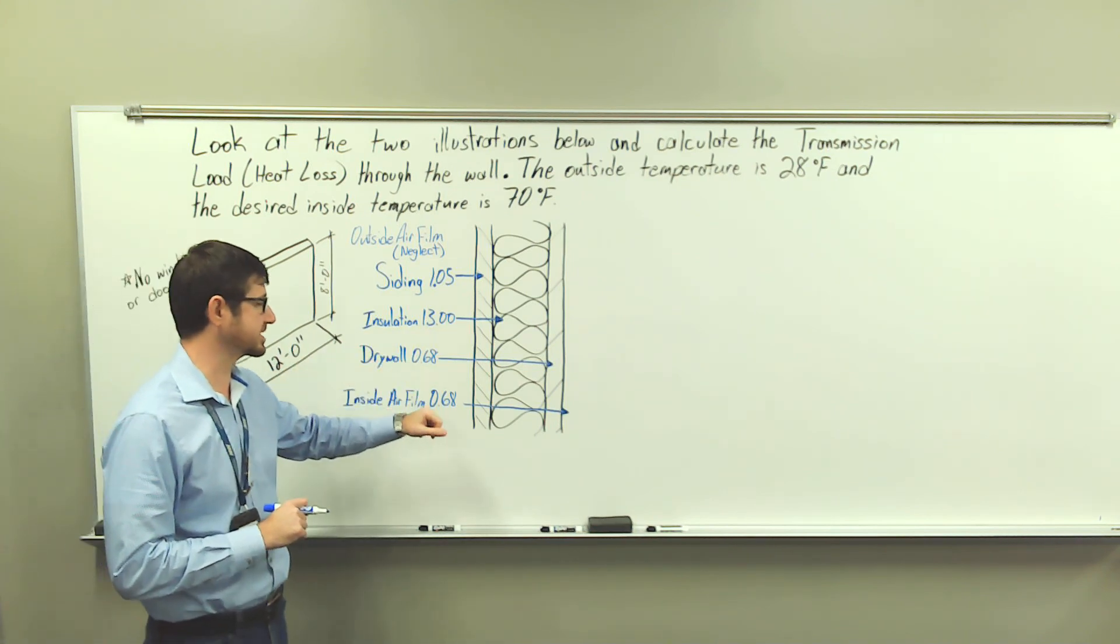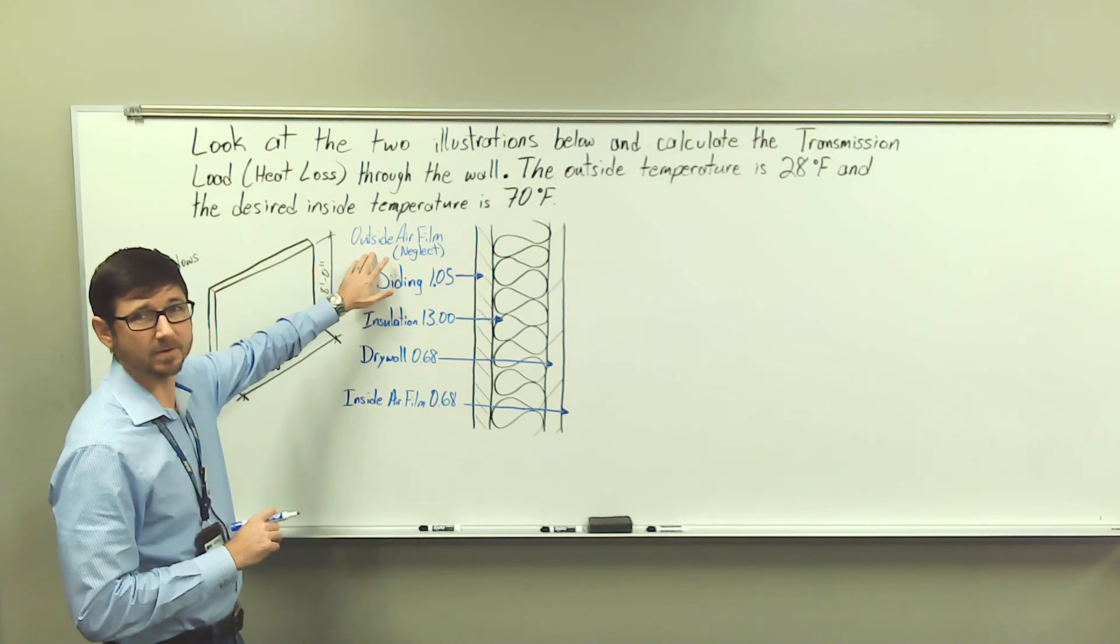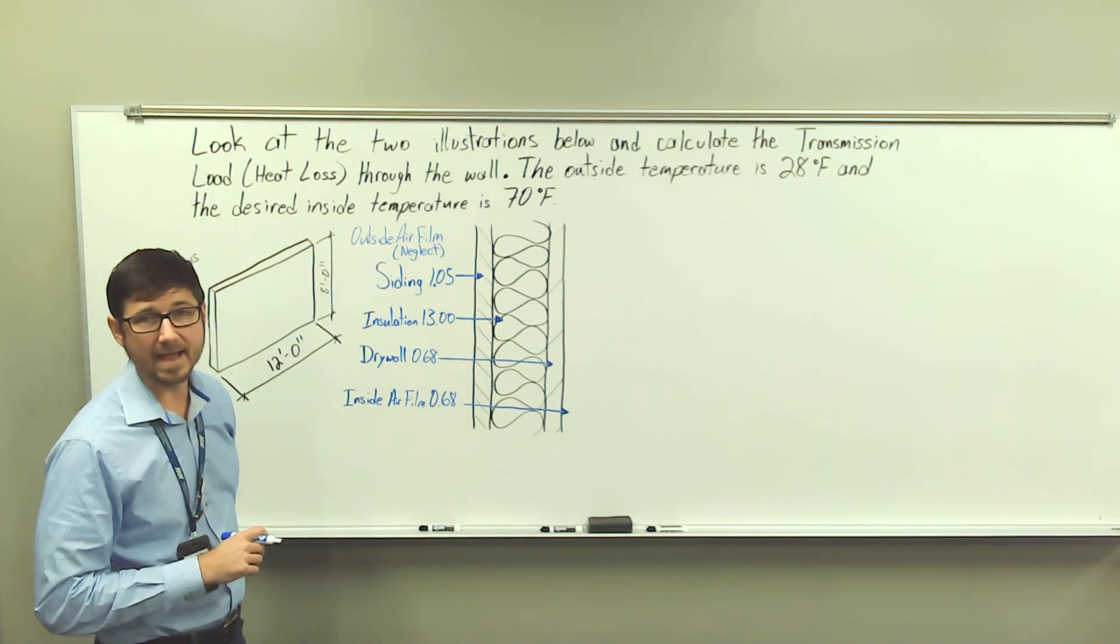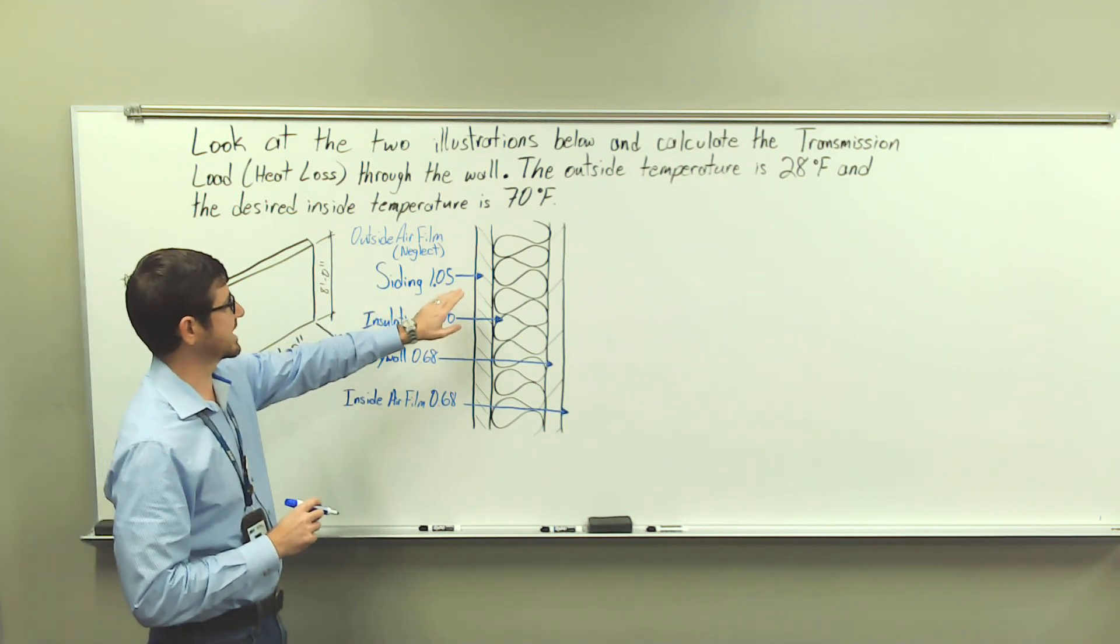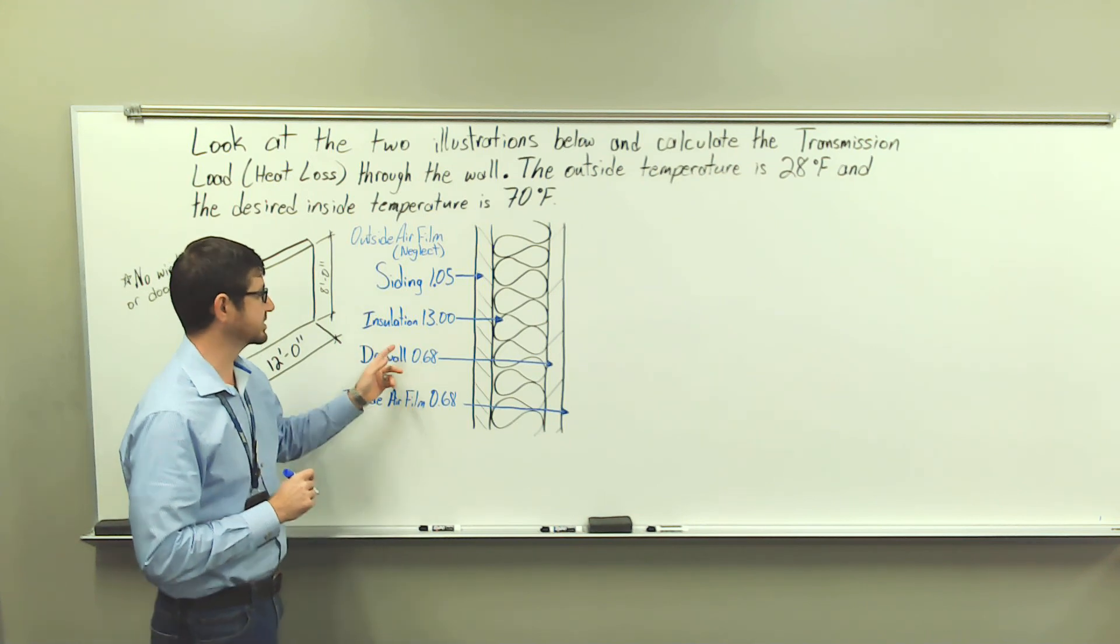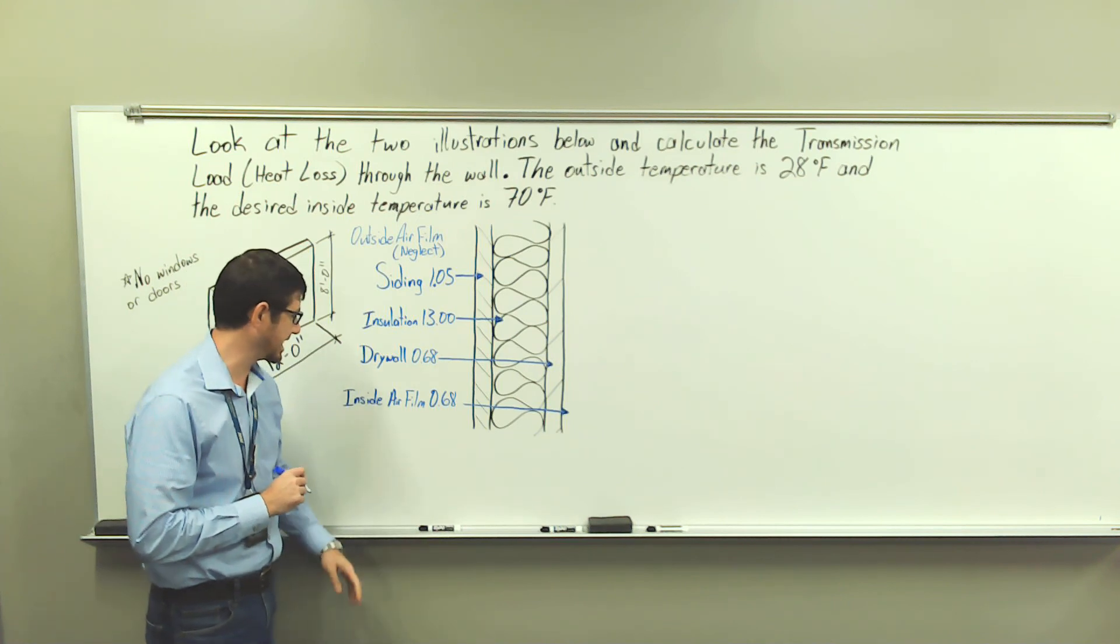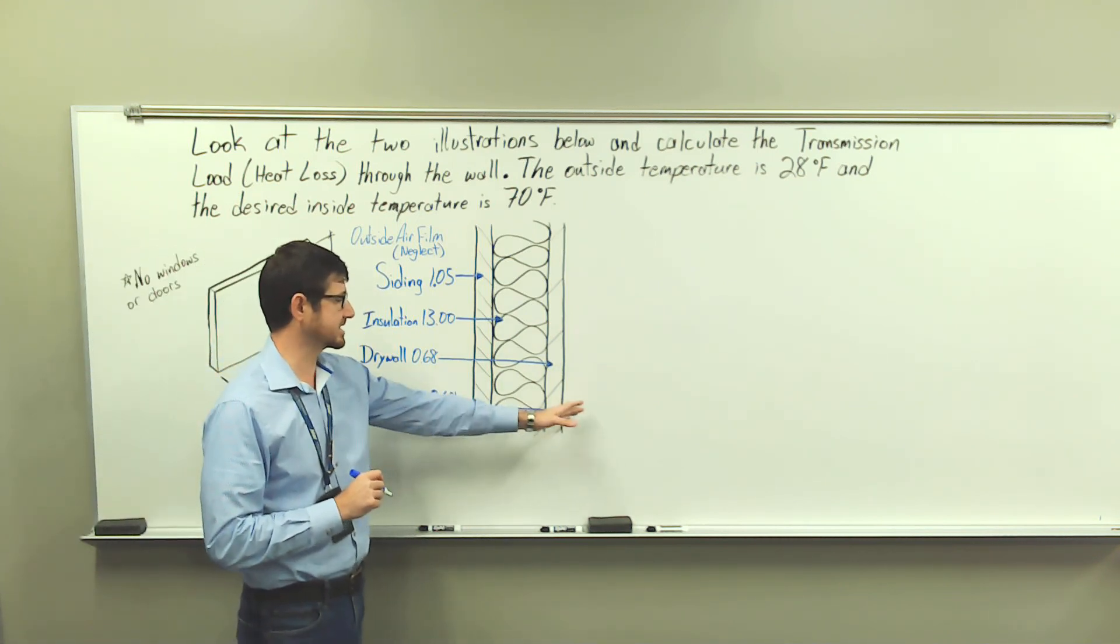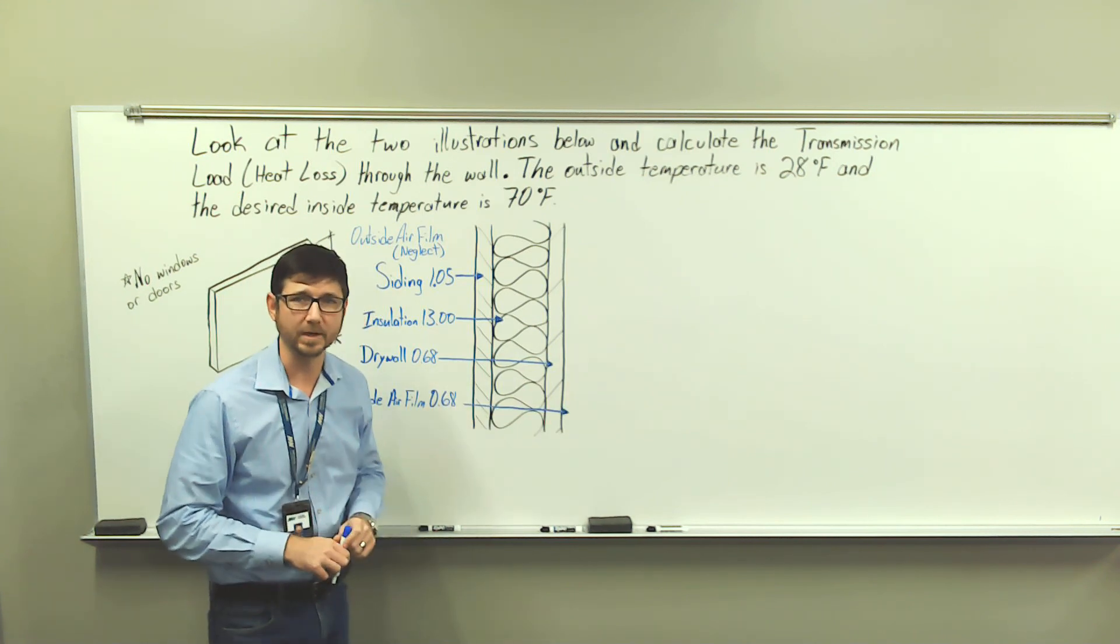And then there is a cross section of this wall. There's some notes on the illustration that says to neglect the outside airfill. The siding has an R value of 1.05, the insulation has an R value of 13, drywall 0.68, and there's an inside airfill on the inside of the building that has an R value of 0.68.